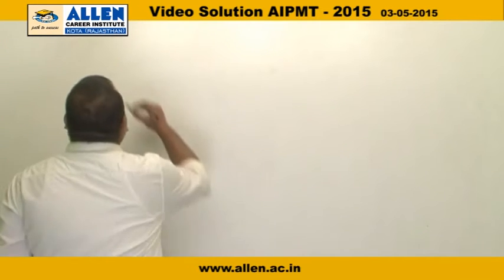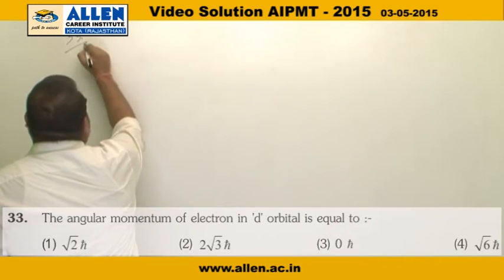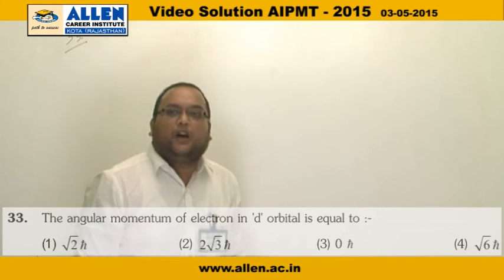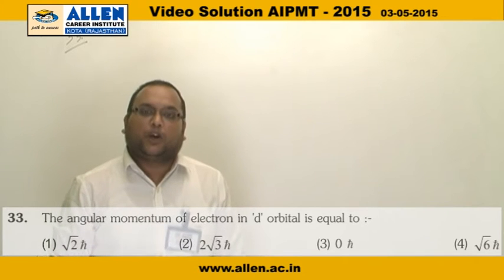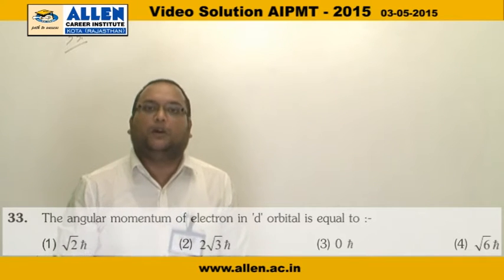Question number 33: The angular momentum of an electron in d orbital is equal to...